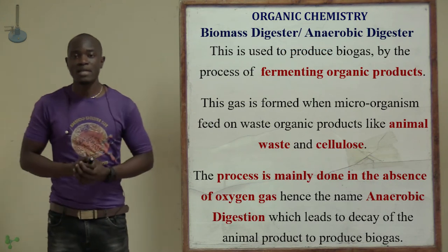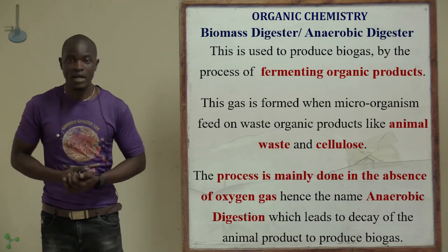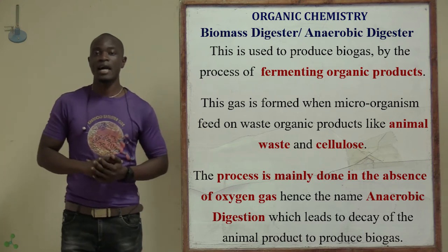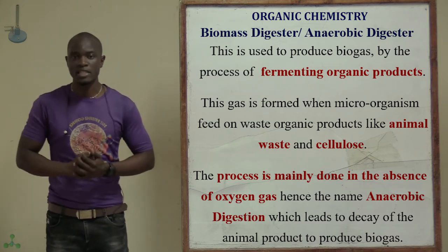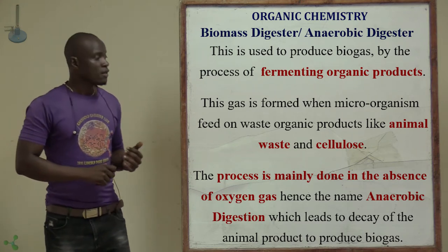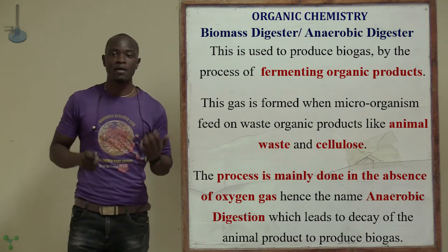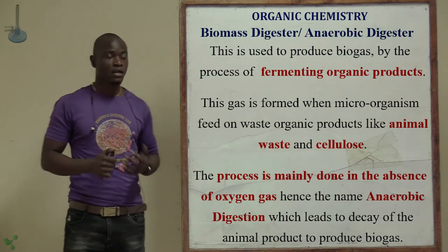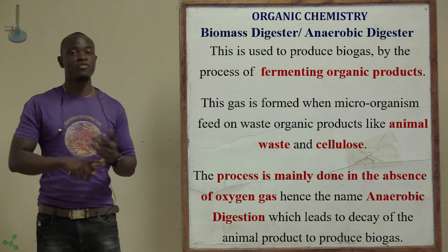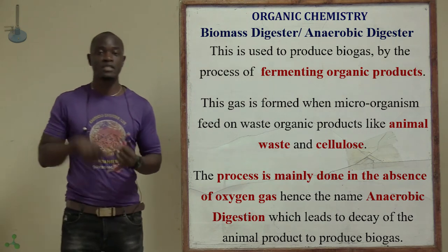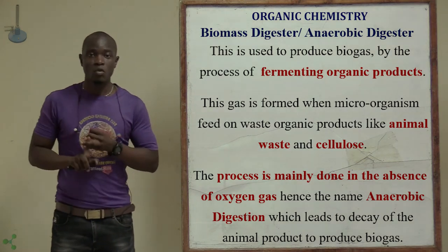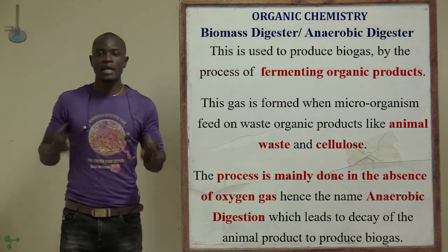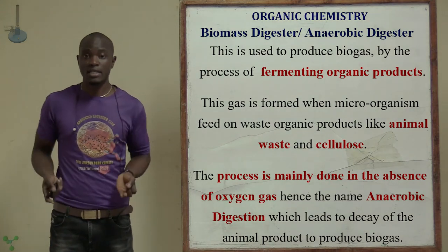Let's look at the biomass or the biogas digester, which can also be called the anaerobic digester. This is mainly used to produce biogas by fermenting organic compounds, like for example silage, grass, and decaying matter.